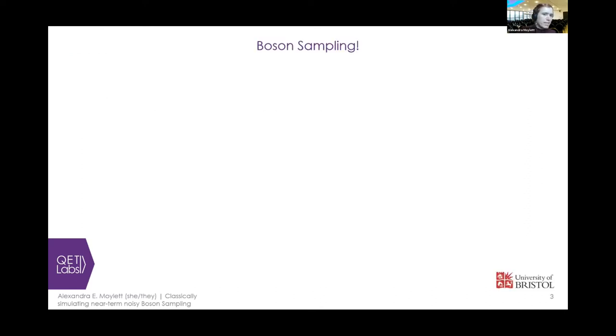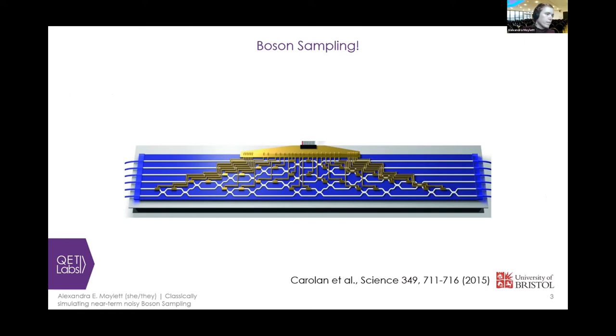So what is boson sampling then, and where does that fit into this picture? Well, in boson sampling, we start off with a linear optical circuit, such as this one here from Anthony Laing's group in Bristol, and it is implementing some random unitary operation. We input into this optical circuit indistinguishable single photons, n of them in total, and we send them into our optical circuit. And the question we're asking in boson sampling is where did these photons come out on the other side? Now, obviously, this is a probabilistic question. They will come out in some random configuration according to a probability distribution, but can we sample from that probability distribution?